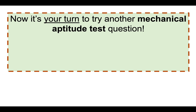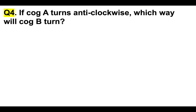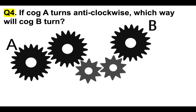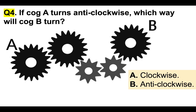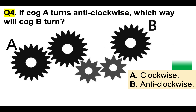Now it's your turn to try another mechanical aptitude test question. Please put your answer to question 4 in the comments section below the video for marking. Question 4: if COG A turns anticlockwise or counterclockwise, which way will COG B turn? Is it A — clockwise, or B — anticlockwise? Here's your timer.